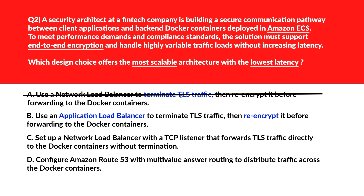Moving to option B. Option B says: use an Application Load Balancer to terminate TLS traffic, then re-encrypt it before forwarding it to the Docker containers. Application Load Balancer adds overhead due to HTTP-level processing and TLS re-encryption. Incorrect.